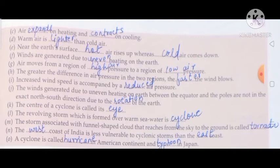J) the winds generated due to uneven heating on earth between the equator and the poles are not in the exact north-south direction due to the rotation of the earth. K) the center of a cyclone is called its eye. L) the revolving storm which is formed over warm sea water is cyclone.